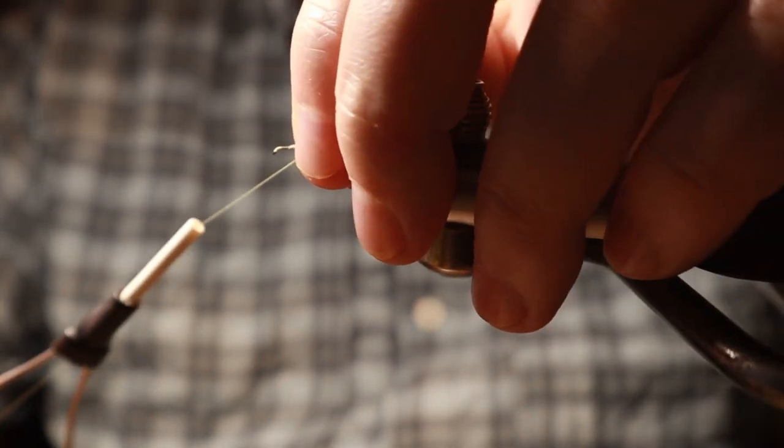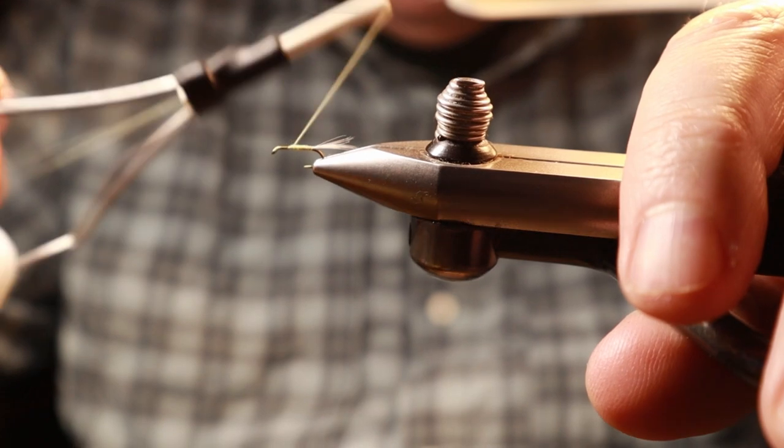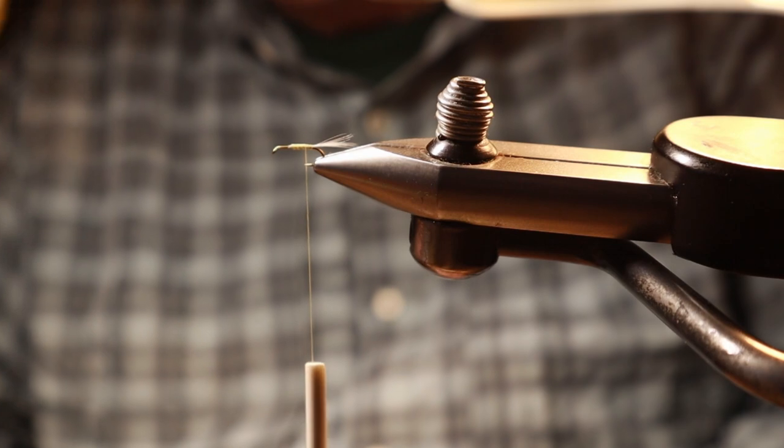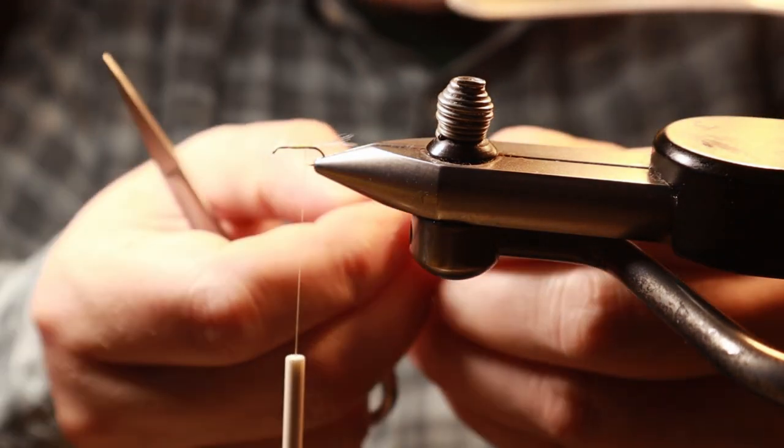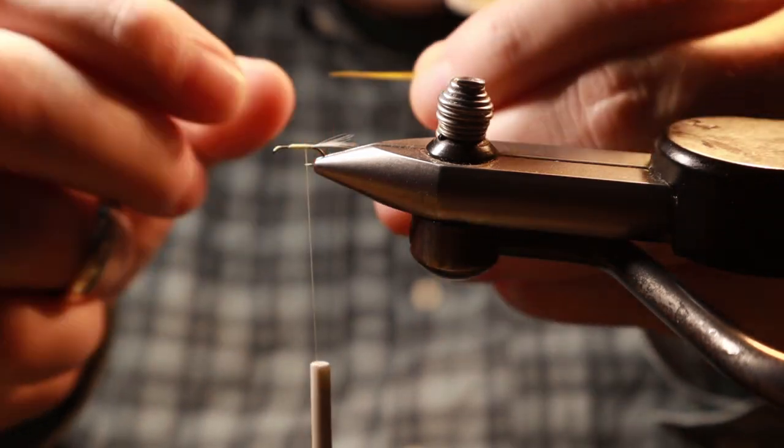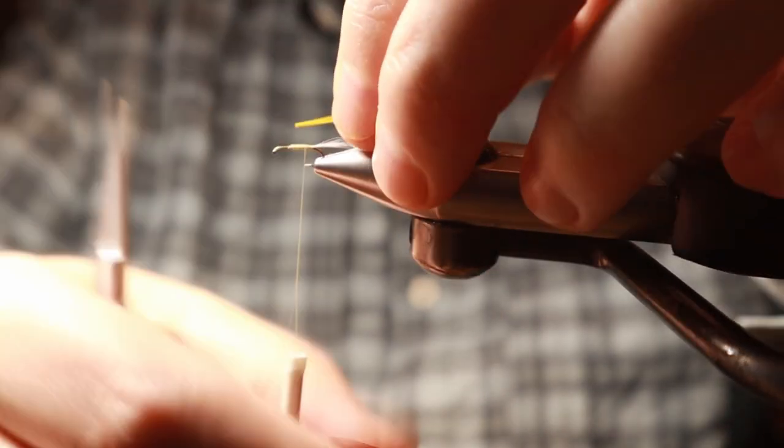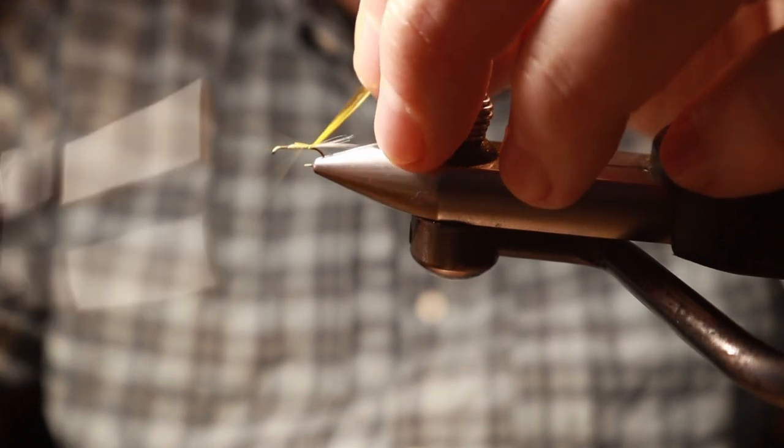I usually throw a wrap right underneath to splay those tails up a little bit, and then we're going to put a biiot which is basically just a light olive color. What I do is I throw the concave side kind of wrapping around the hook on top, so that when I wrap it you'll see it gives you that nice segmented look.